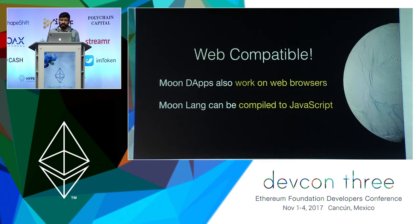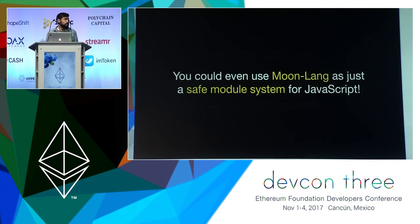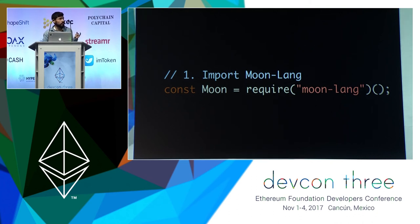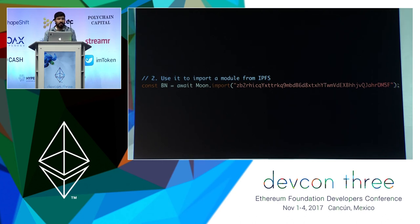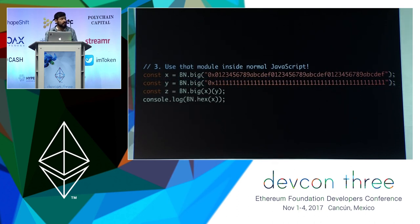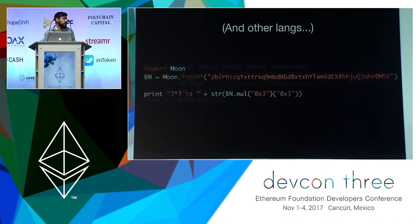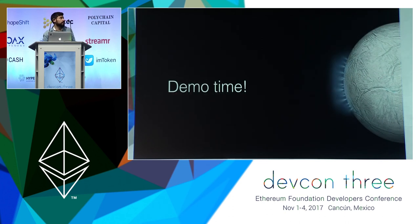Some of you may be thinking: I like the web — are you throwing the whole thing away? Of course not. Everything is web compatible. Moon dApps also work inside a browser, and Moon can be compiled to JavaScript. In fact, you could even use Moon as just a safe module system for JavaScript. For example, you import Moon in normal JavaScript code, then use Moon to import a library from IPFS or Swarm, and then use that library inside normal JavaScript. You don't actually need to use Moon to benefit from it. You can think of it as a safe code-sharing tool, not necessarily a new language.